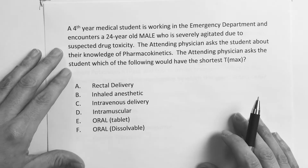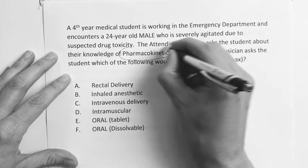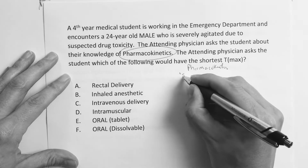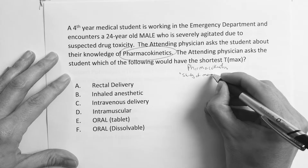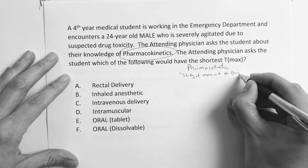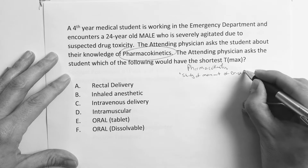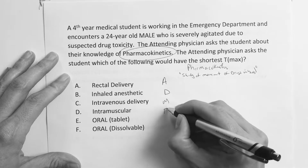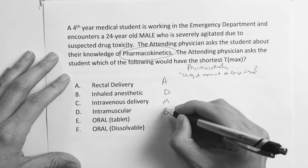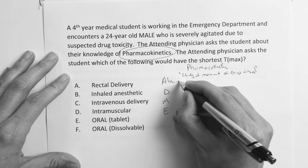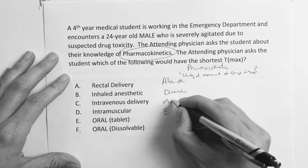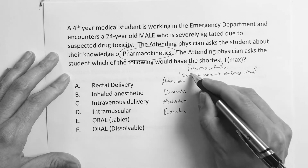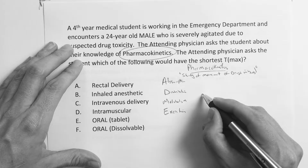To answer this question, we need to cover the basics. Pharmacokinetics is simply the study of the movement of drugs in the body — how drugs move in the body. What you need to know is: Absorption, Distribution, Metabolism, and Excretion — ADME — and how drugs move through the system.